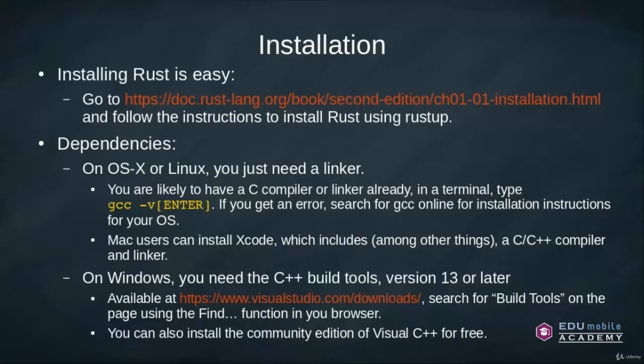On Windows, you need the C++ build tools for Visual C++, and they have to be version 13 or later — available at the provided link. Search for the build tools on the page using the find function in your browser. You can also install the entire community edition of Visual C++ for free if you need an IDE and compiler. Bottom line, all you really need is the linker.